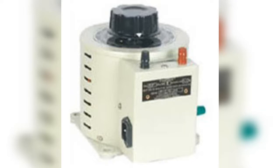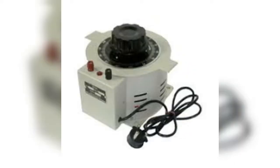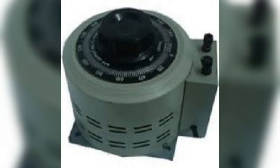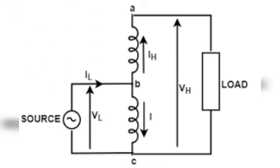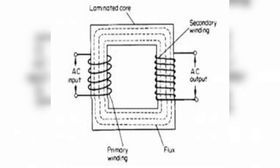It may be recalled that a two winding transformer has two separate magnetically coupled coils with no electrical connection between them. In this lesson we shall see that changing of voltage level can also be done quite efficiently by using a single coil only.